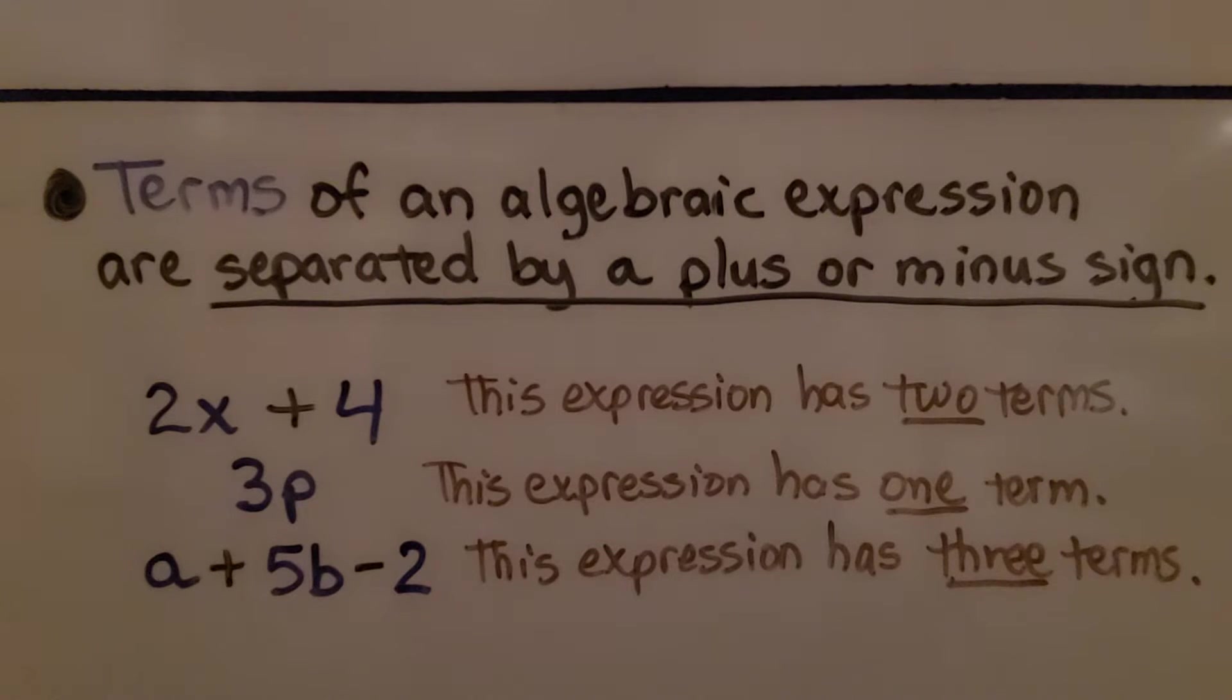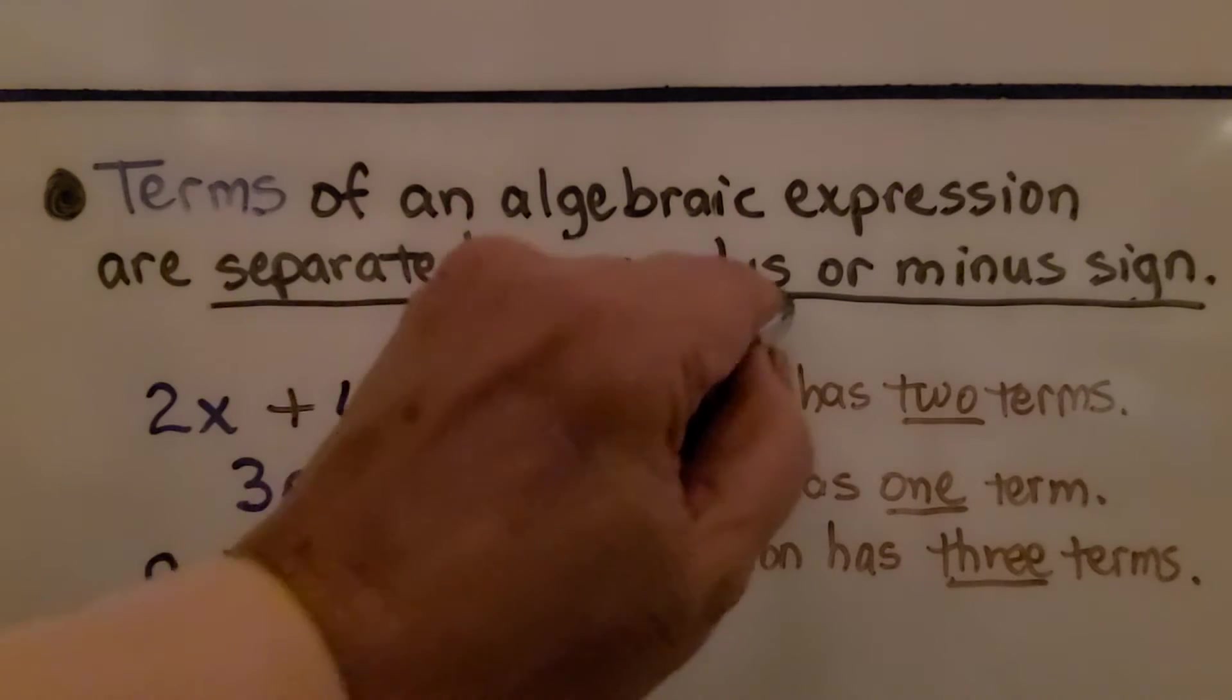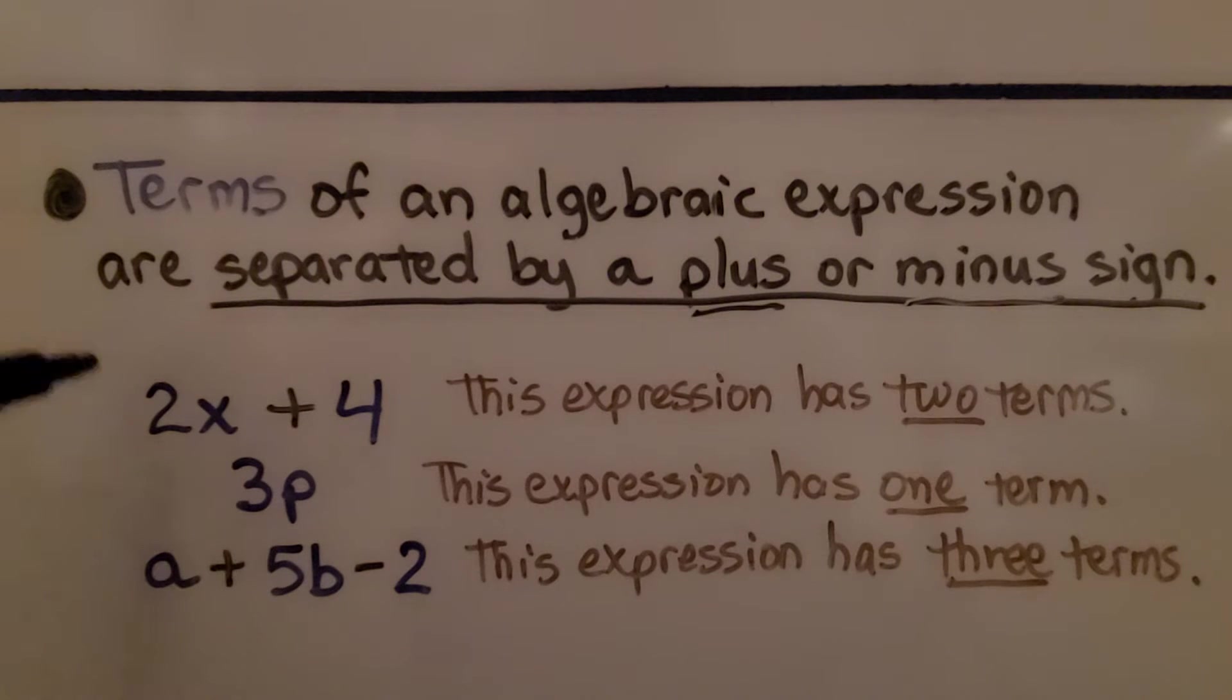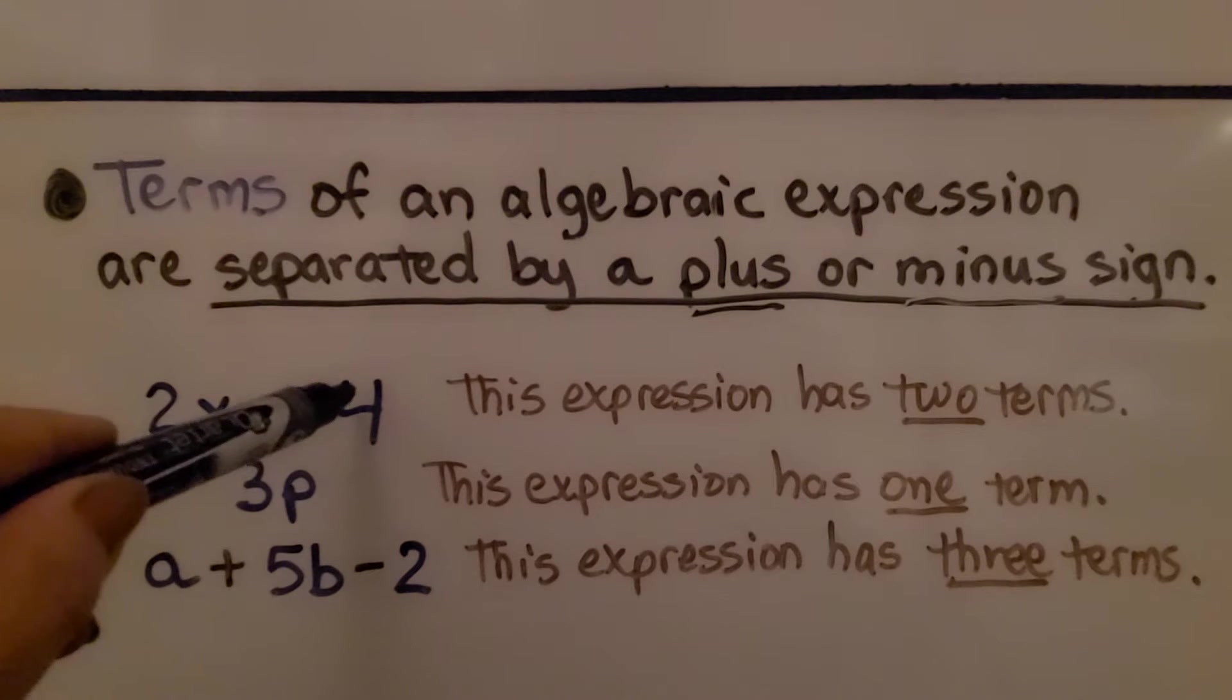In this lesson, we're going to talk about algebraic expressions and their terms. Terms of an algebraic expression are separated by a plus or a minus sign. So here we have two terms because it's separated by this plus sign. We have one term here and one term here.